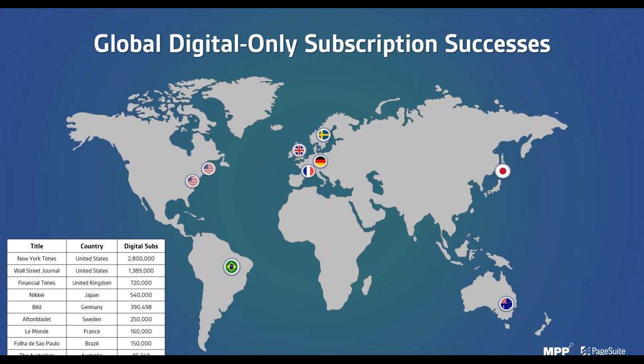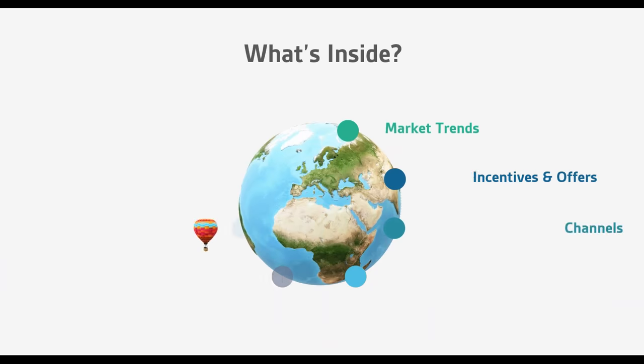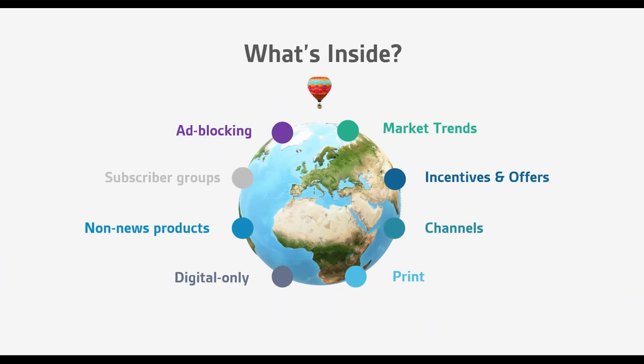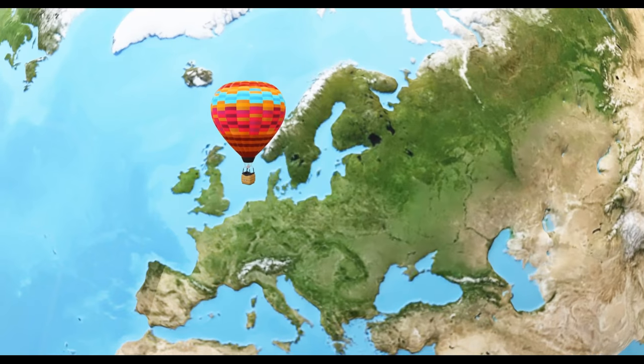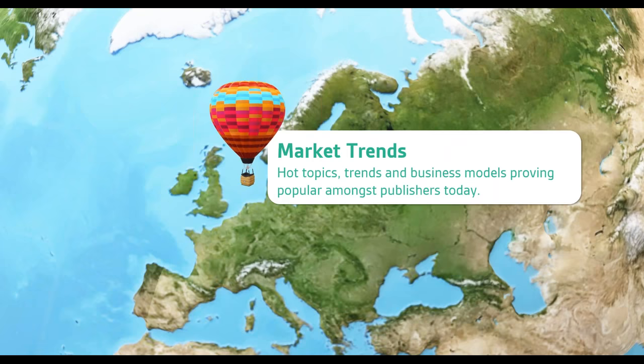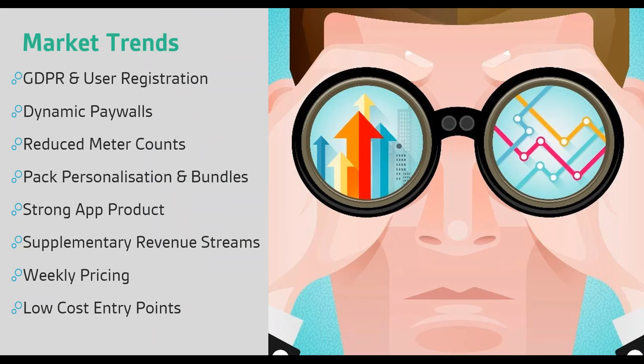So what's inside our webinar — we've got eight topics, ten ideas on each, which equals our 80 strategies. In terms of market trends, GDPR was obviously a hot topic last year and that's meant the introduction of a lot more registration walls. Whether publishers are charging for content or not, they're definitely pulling more data into the top of the funnel to learn from — whether that's anonymous data or registration data — which is also driving the use of more dynamic paywalls.